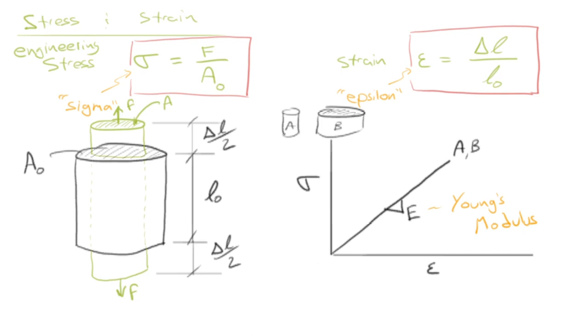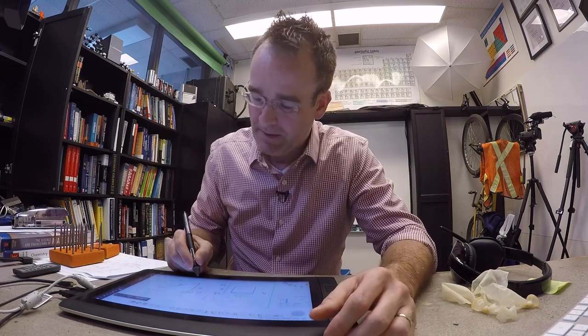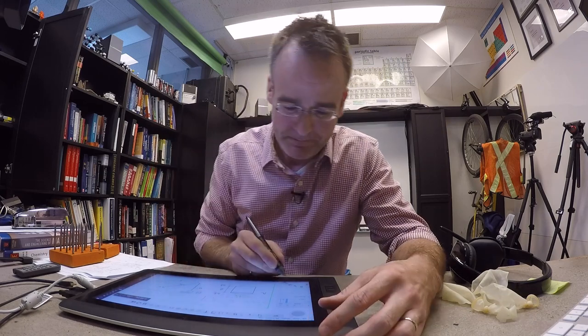And then the last thing that we can do is rewrite now our Hooke's Law expression in terms of stress and strain. So stress is going to be equal to the constant of proportionality, that is what used to be the spring constant, times the strain. And that gets a little box because it's important.